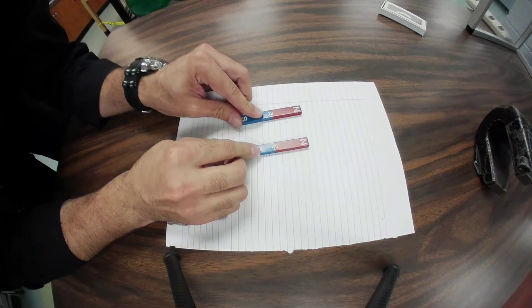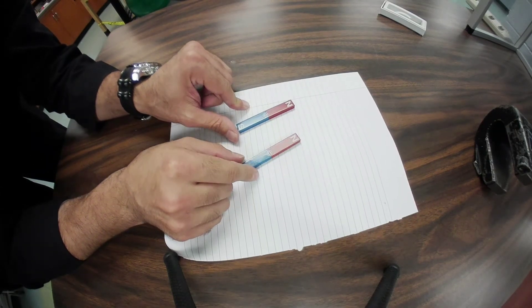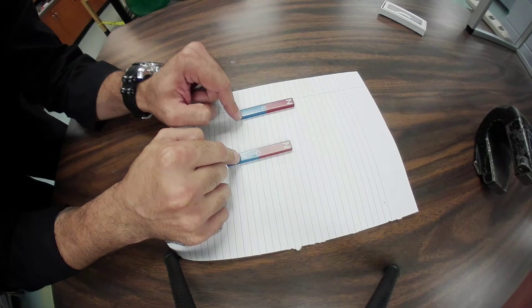Okay, so first thing, you can see that these guys are bar magnets, and they have the north and south poles indicated.